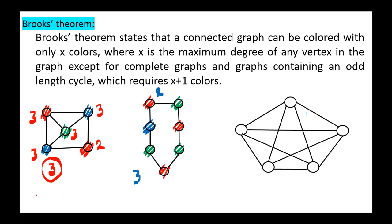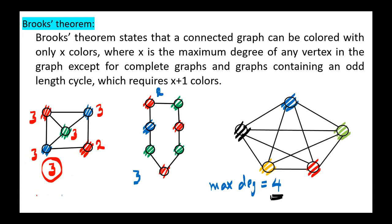In this complete graph K5, the maximum degree equals four (all degrees are equal), so we need five colors since any node is connected to all other nodes — four plus one equals five. Similarly, in the K6 complete graph, we need six colors.